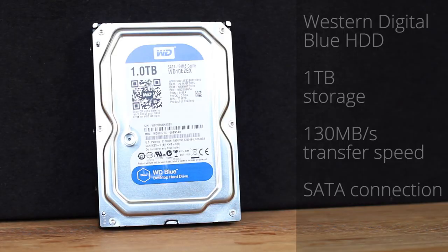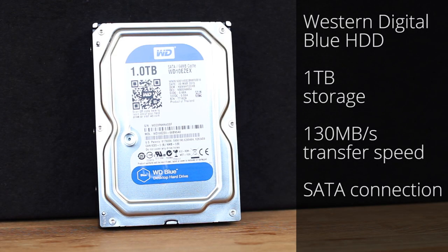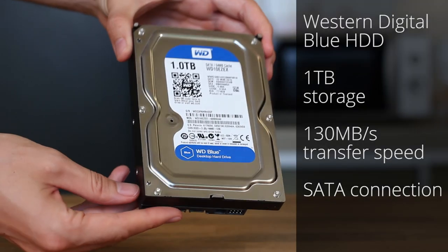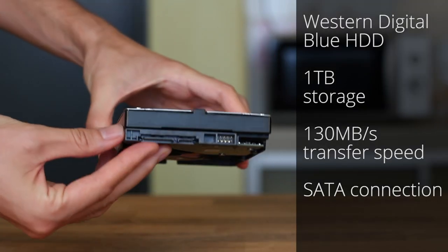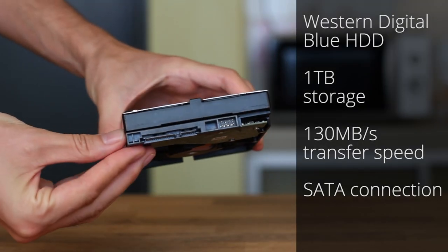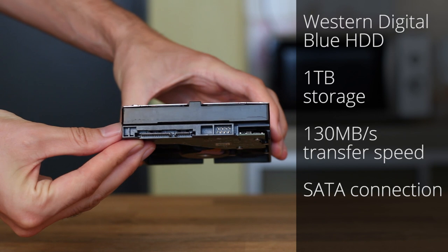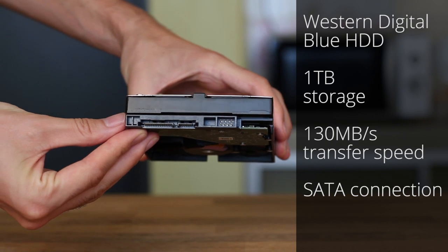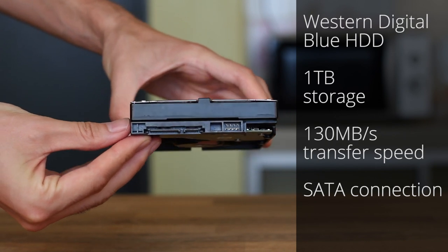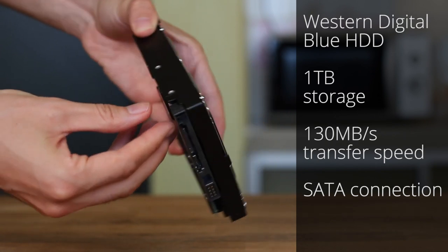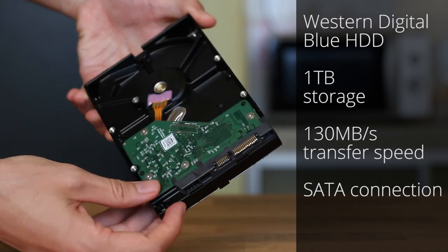This is a Western Digital Blue hard drive. It has 1TB of storage, and it transfers data at around 130MBps, making it about 4 times slower than the Samsung SSD. It's also bigger and heavier, and of course it uses serial ATA connections.